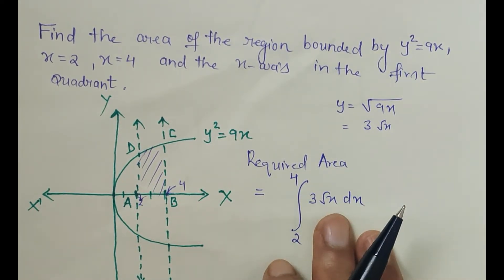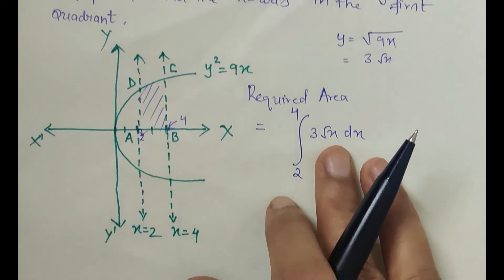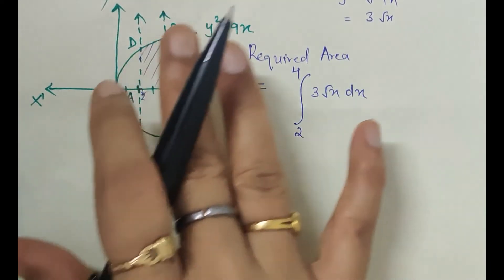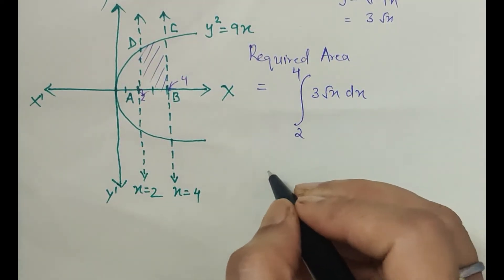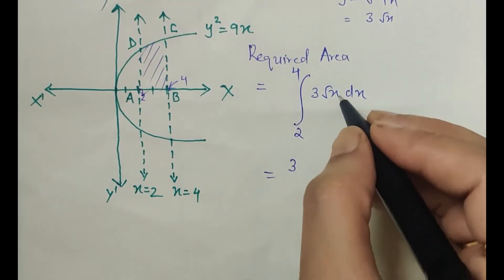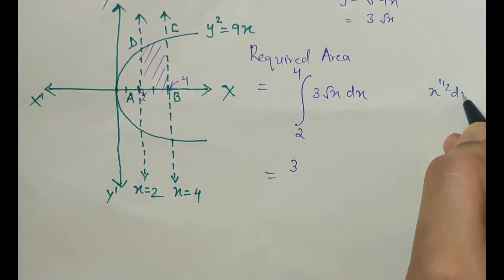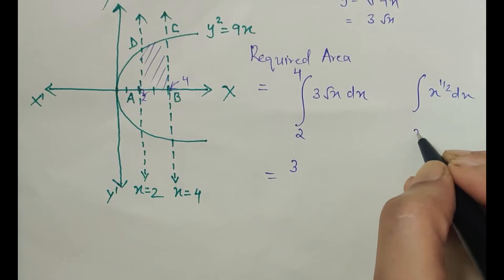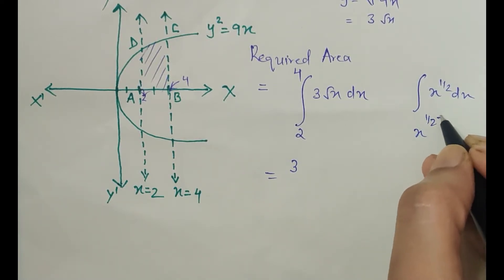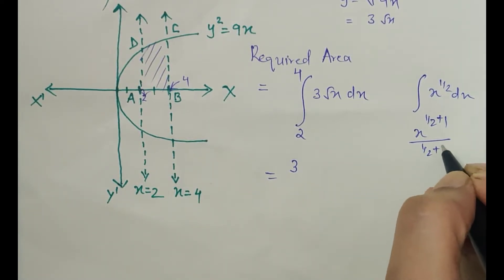Now we just have to solve this integral and the solution will be the area enclosed by the given conditions. So here, 3 can be taken outside, and it is x^(1/2). The integration of x^(1/2) dx is x^(1/2 + 1) / (1/2 + 1).